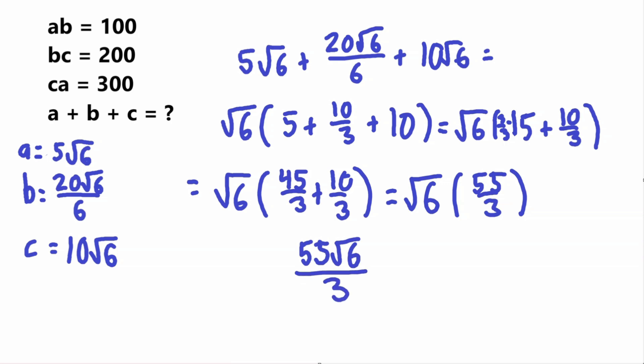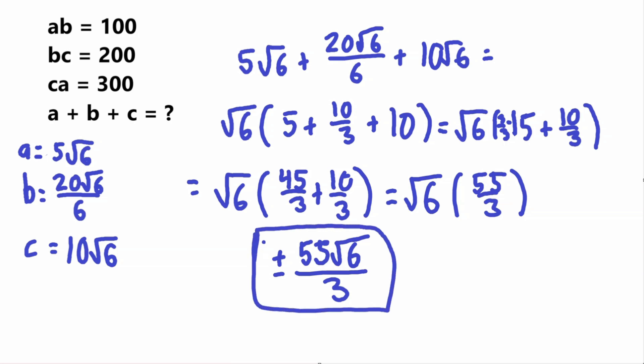It's important to note that when you take a square root, the answer can be positive or negative. So since we took a square root earlier, this answer is either positive or negative 55√6 over 3 — there are two answers. And that is our final answer. Thank you for watching this video, I hope you enjoyed it — see you next time, bye!